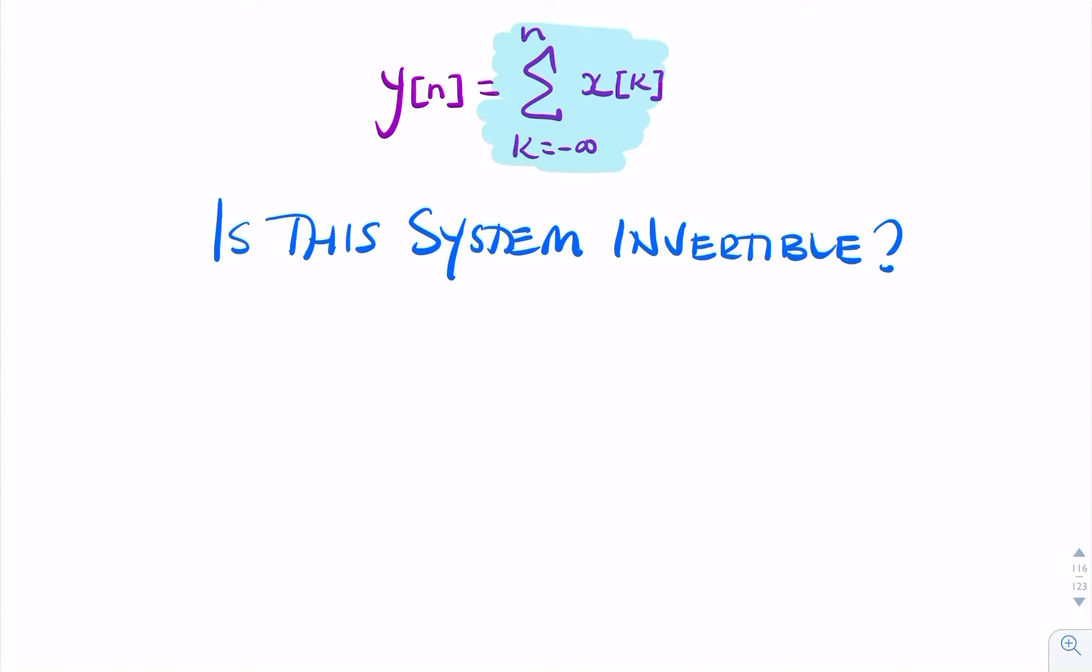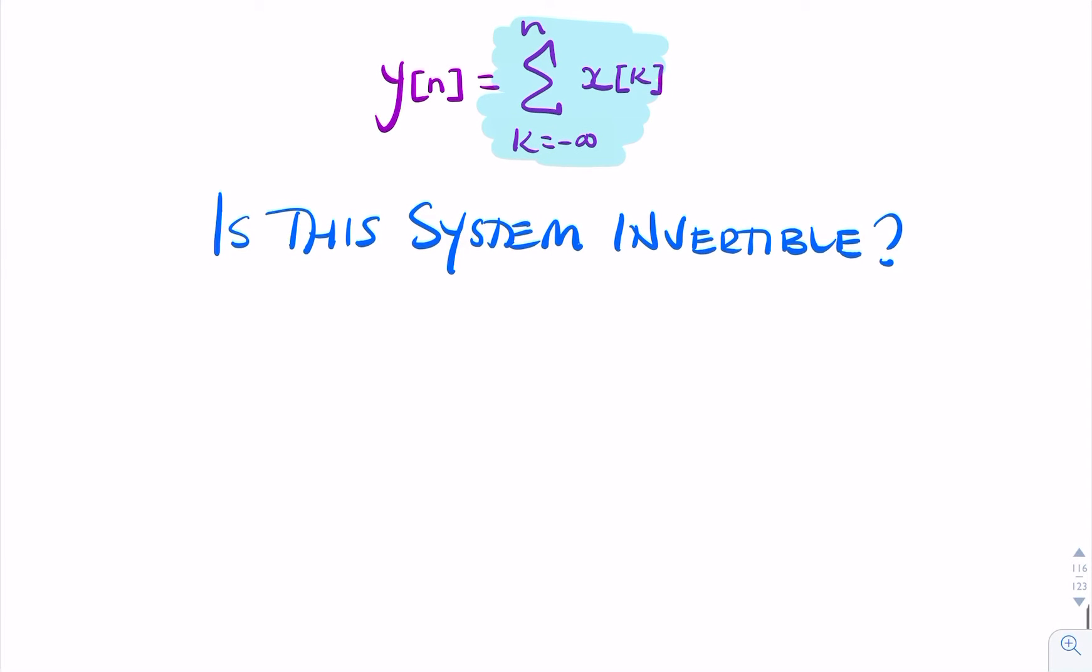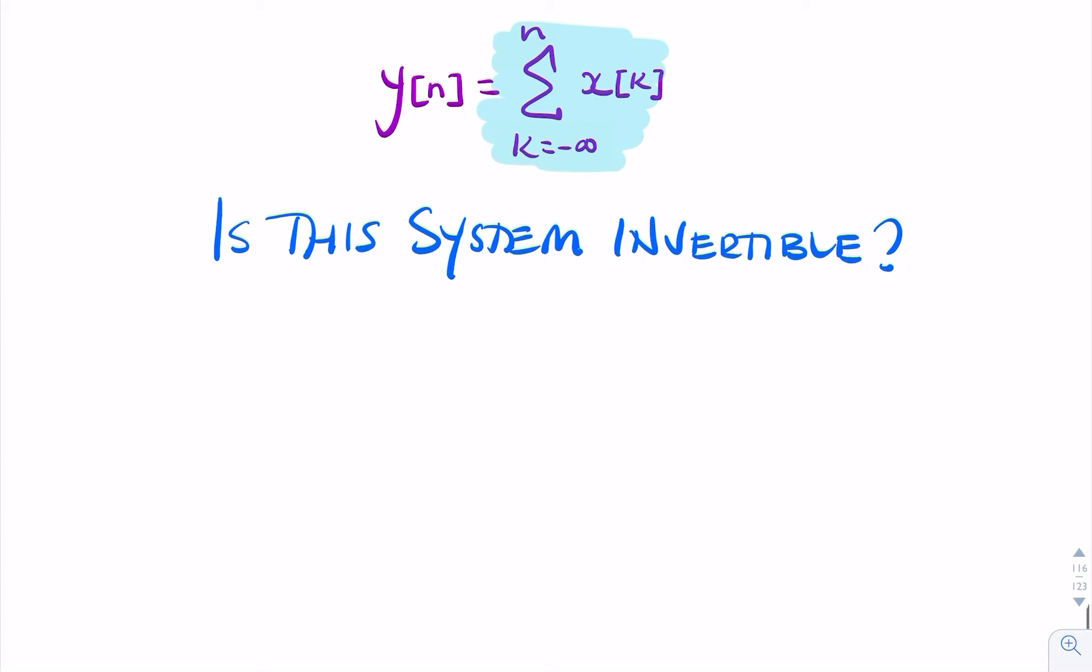Now, it isn't immediately obvious, but this is a well-known system. If you take any two values of y, y of n minus y of n minus 1, so for example, if I said y of 6 minus y of 5, what would that give me?